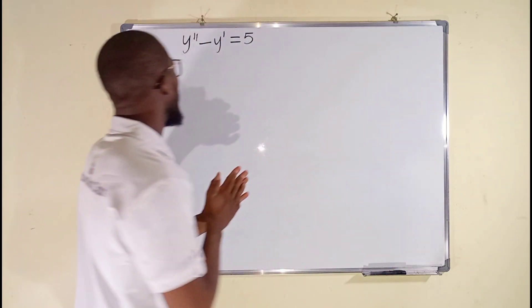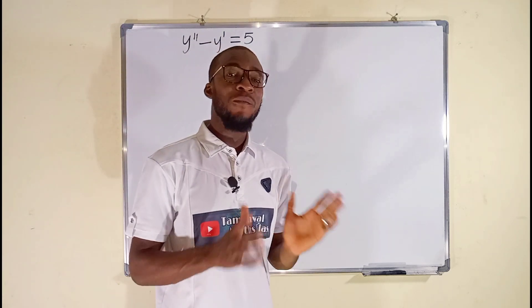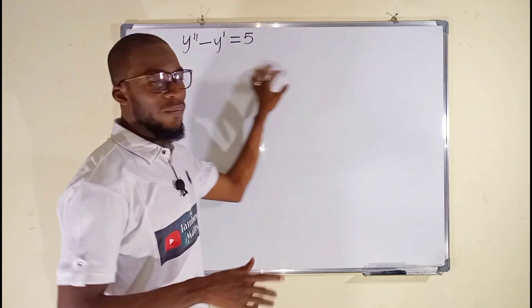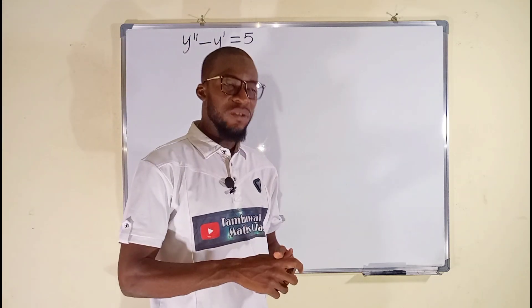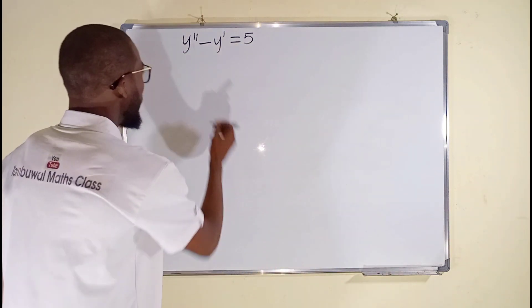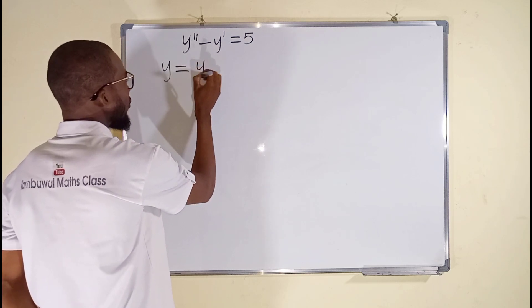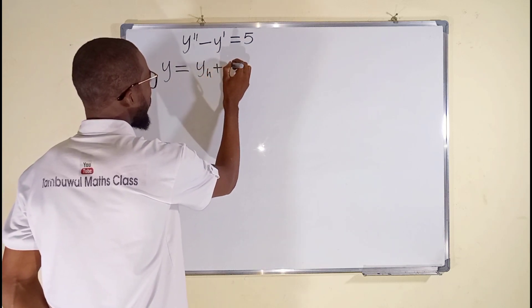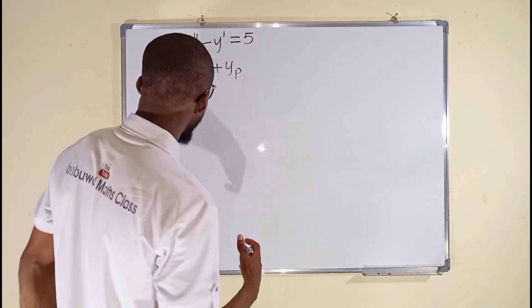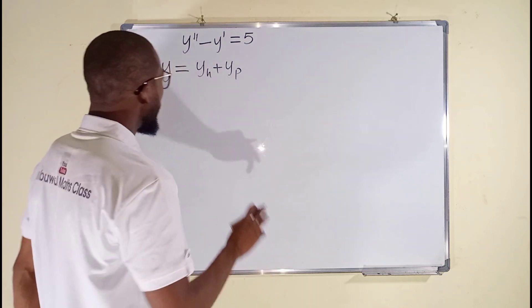You can see we have y double prime minus y prime equal to 5 and 5 is a non-zero constant because if it is 0, the whole of this equation is said to be homogeneous. Remember, the general solution will be y, which is a function of x, equal to y sub h plus y sub p. y sub h, as always, is the general solution to the homogeneous type and this is said to be the particular solution.